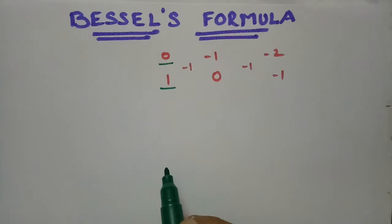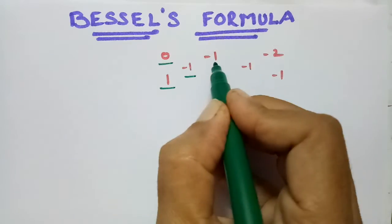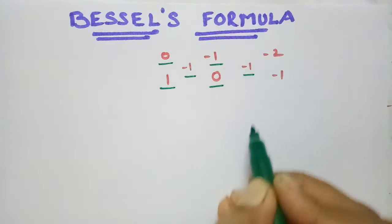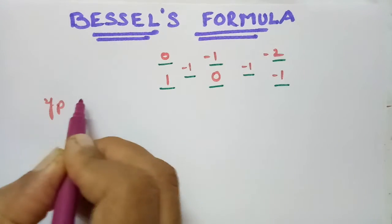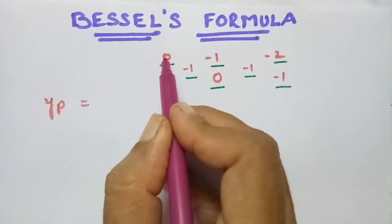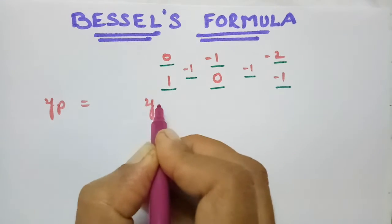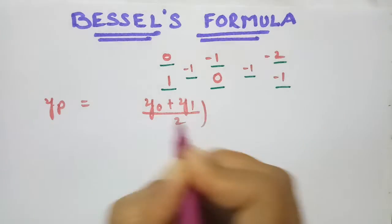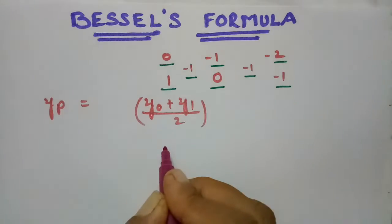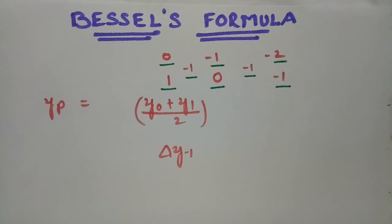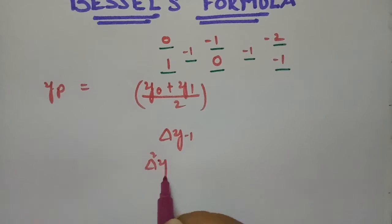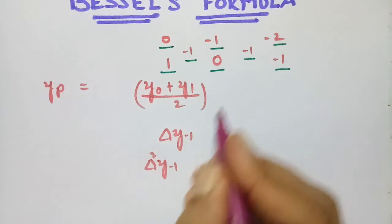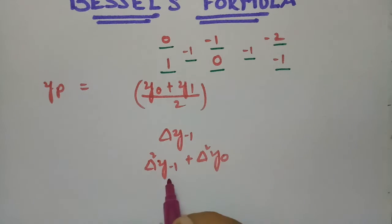We have to take the average of these 2 and the next single value, and again take the average of these 2 and the next single value. So in Bessel's formulae, the yp value: first we have to take the average of these 2, that is y-naught plus y1 by 2. The next one is a single difference, that is delta y minus 1, and the next one we take the average: delta squared y minus 1 plus delta squared y-naught by 2.